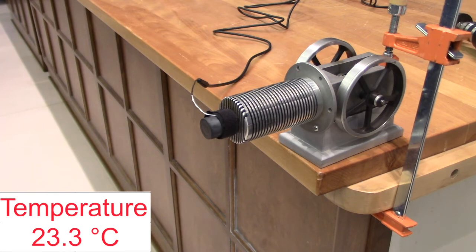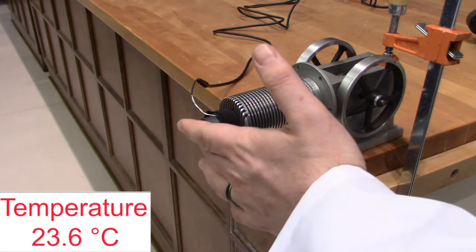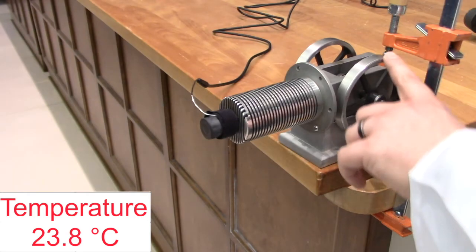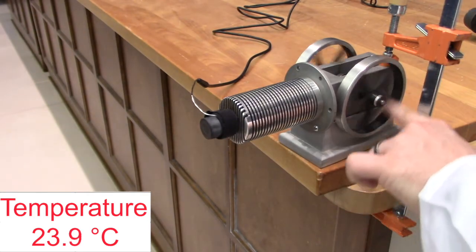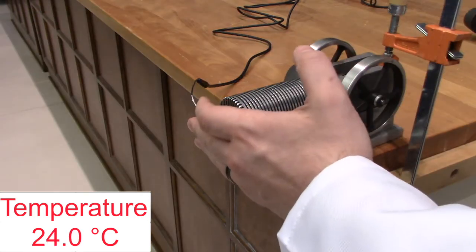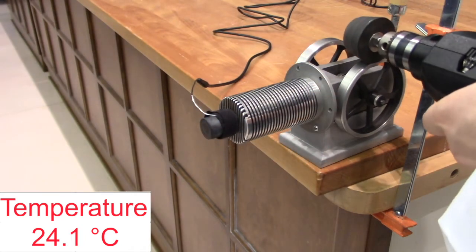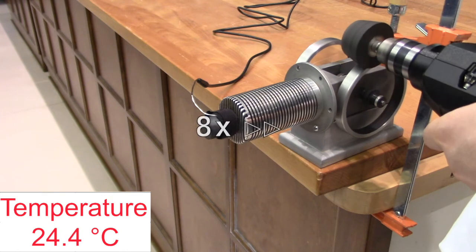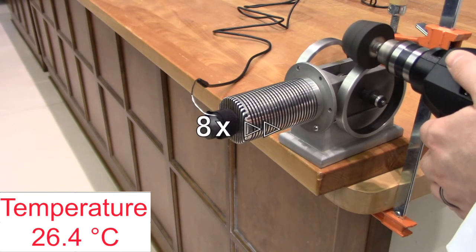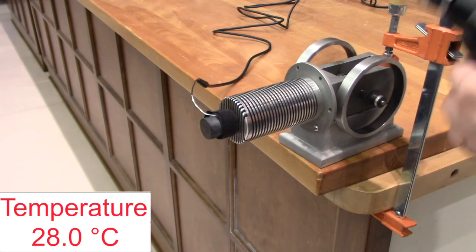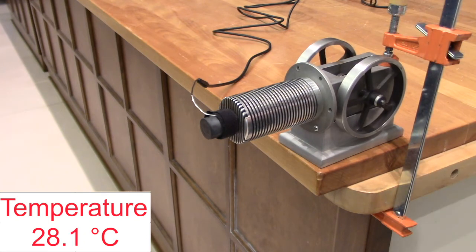We find we can easily drop below room temperature and create a temperature differential. This side is now cold. Even though the piston is being driven in the same direction as when we heated it, the end point is getting colder. If we change the direction, we heat it up pretty quickly.